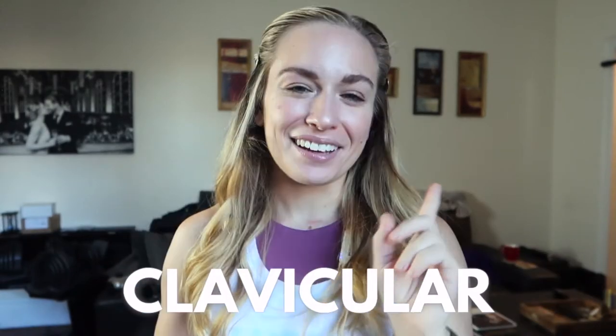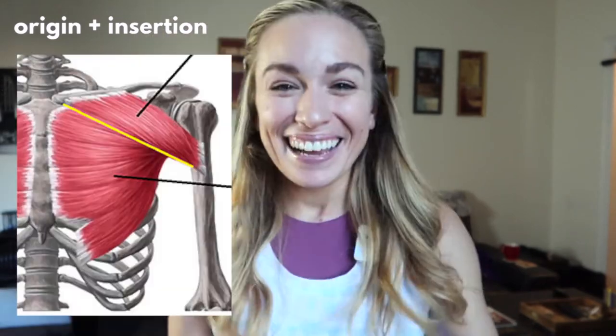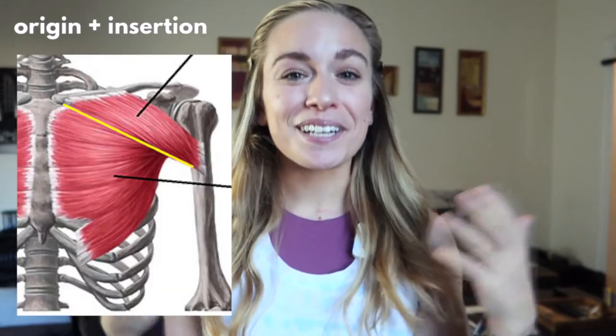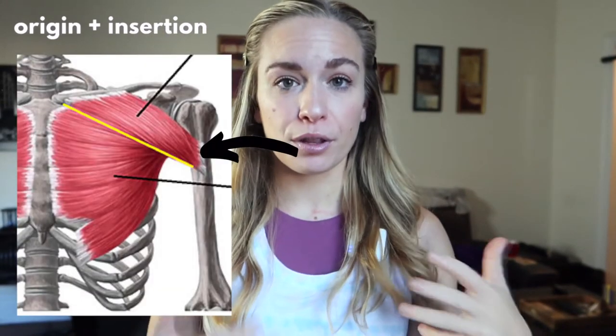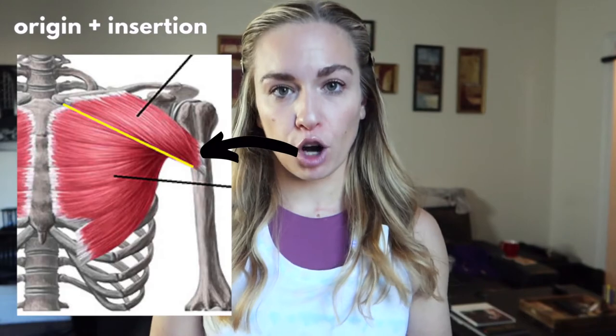So starting with the upper part of the chest — that is the clavicular section. The clavicular section of your chest originates at your clavicle, and then it's going to insert into your humerus, or the bone of your upper arm.